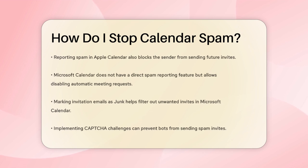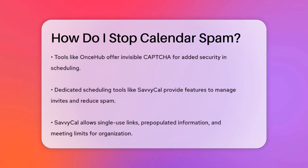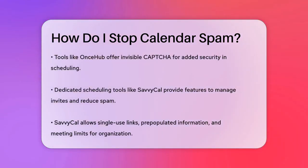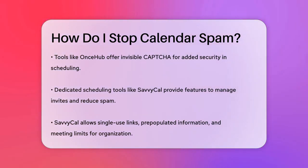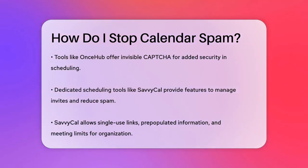Another effective method is using CAPTCHA challenges. Tools like OnceHub implement invisible CAPTCHA, which requires users to prove they are human, making it difficult for bots to complete. This can be set up in the security settings of your scheduling tool.